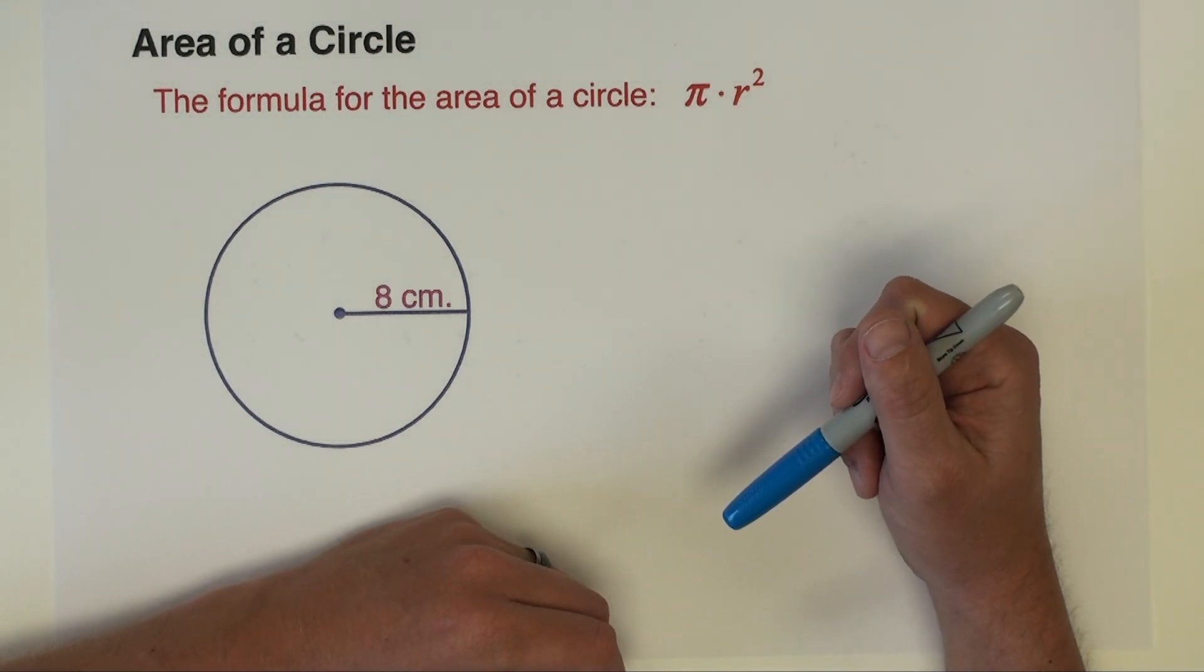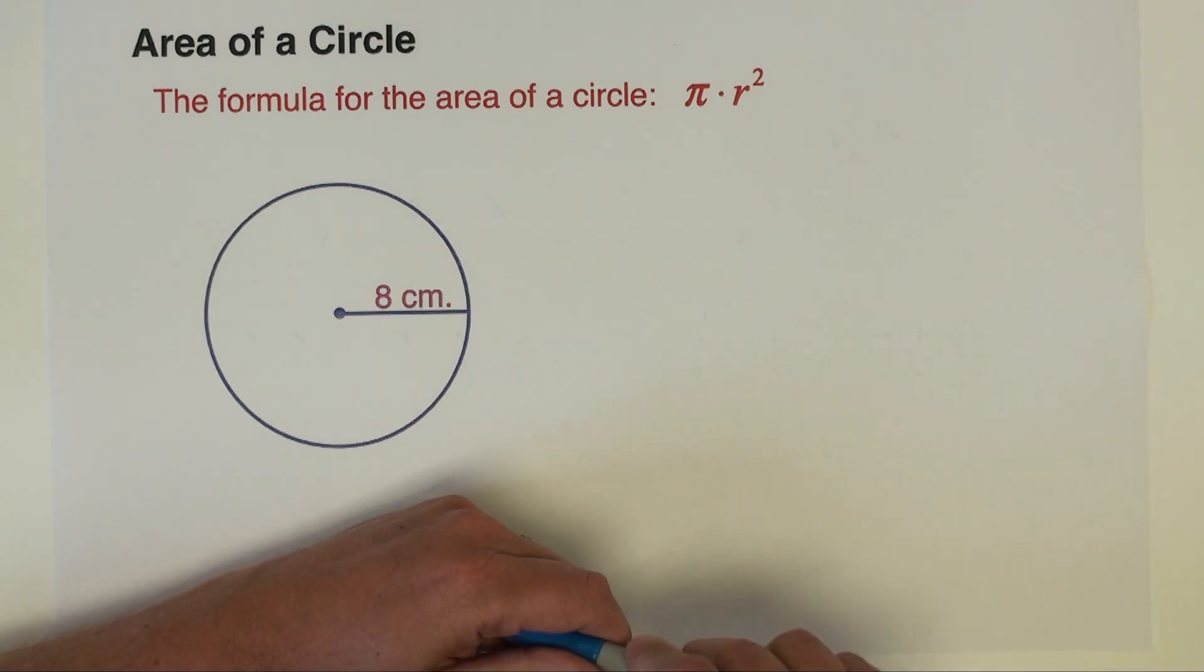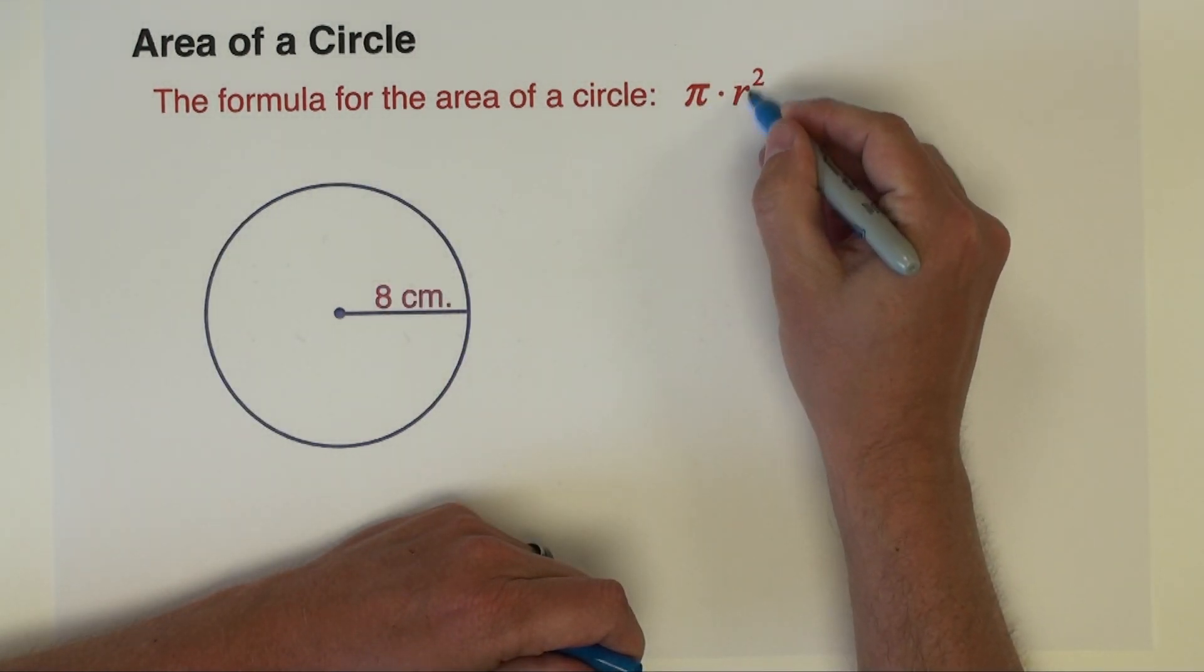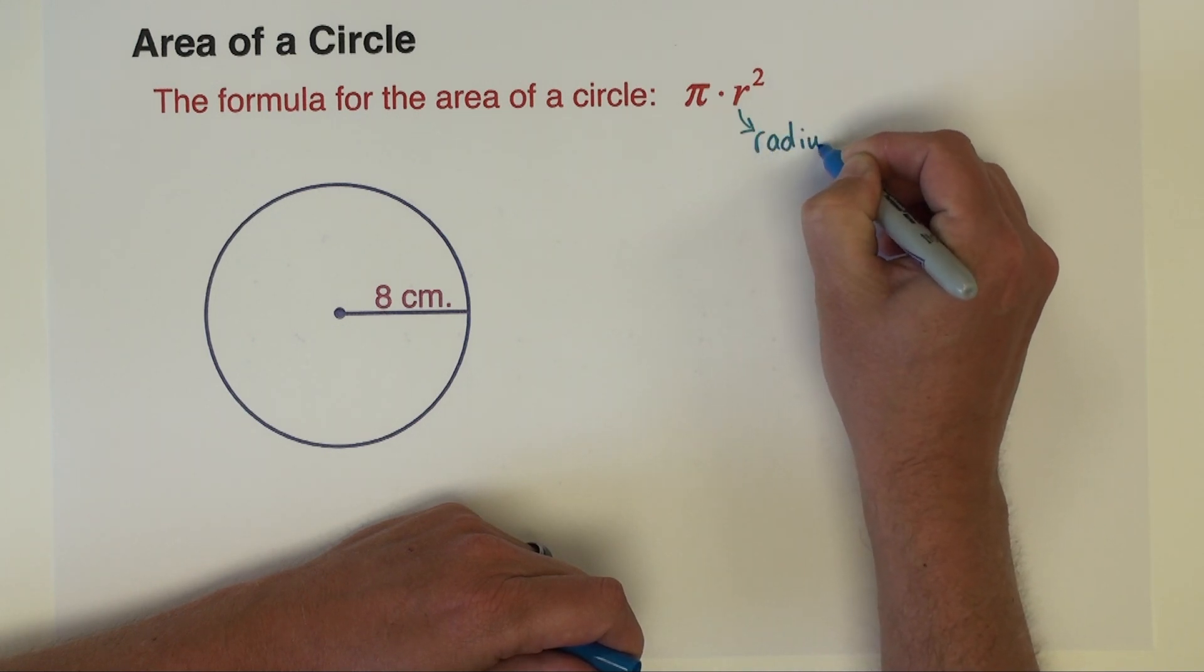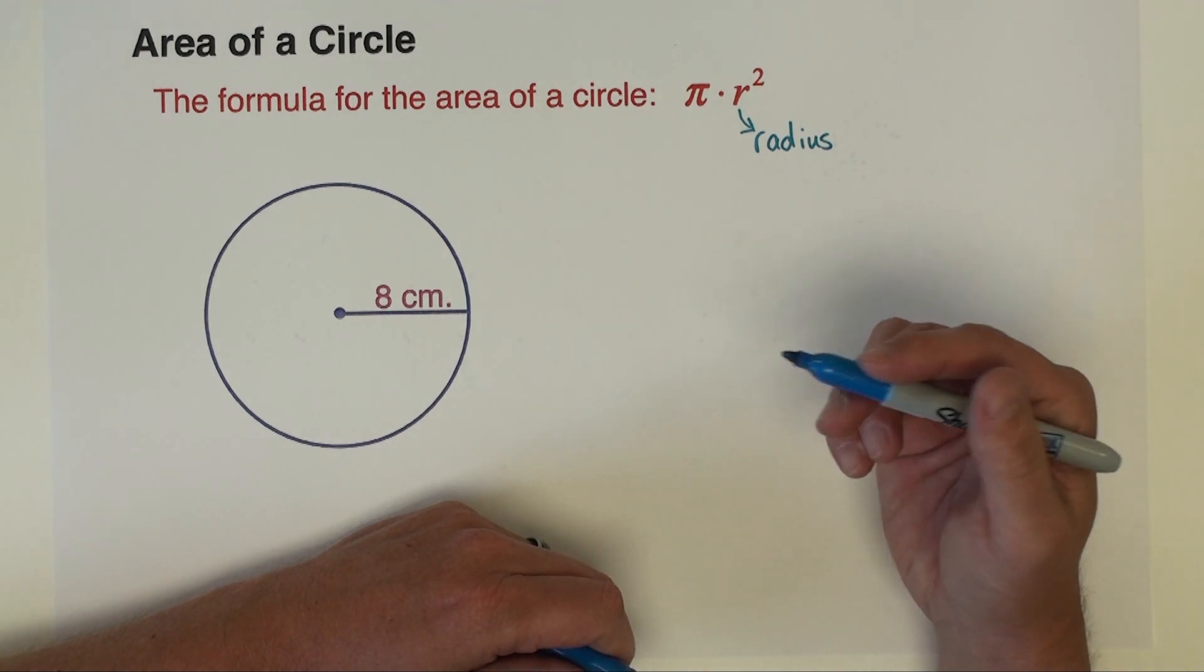Hello and welcome to a Math Minute, a quick how-to over a topic that's been troubling you. The topic for this video is how to find the area of a circle. The formula for the area of a circle is pi times r squared, and r is the radius of the circle.